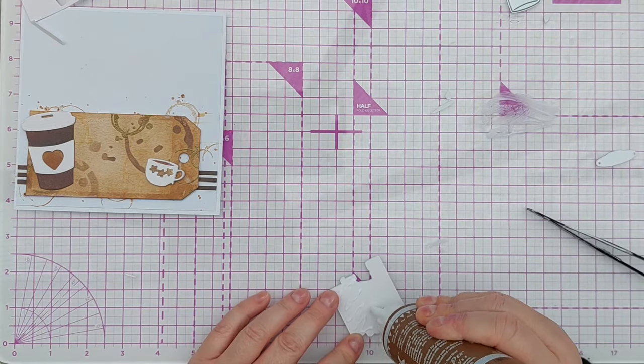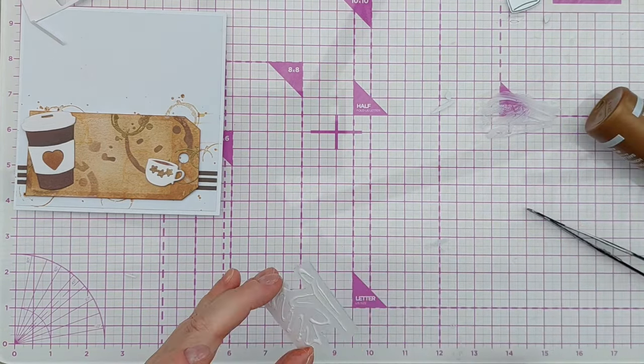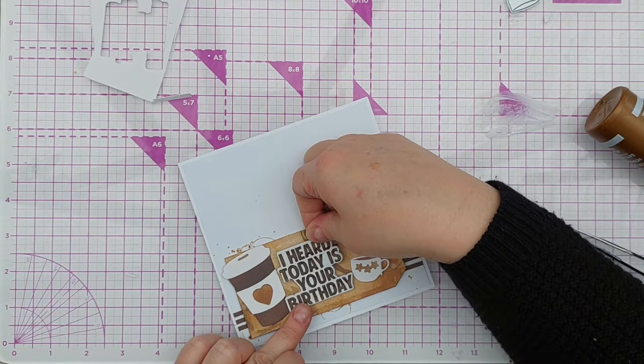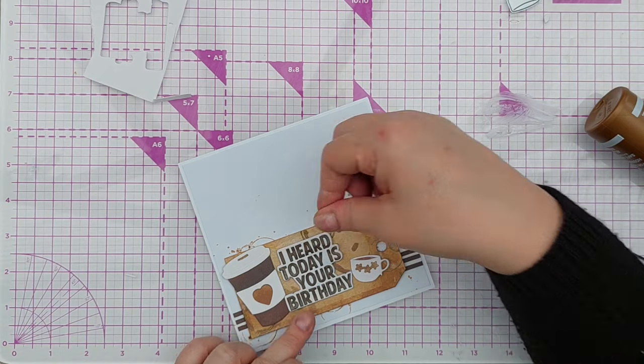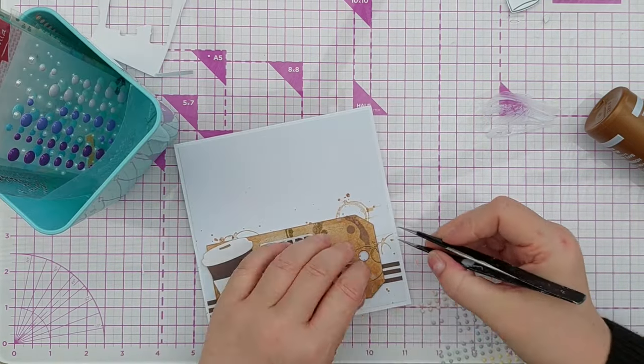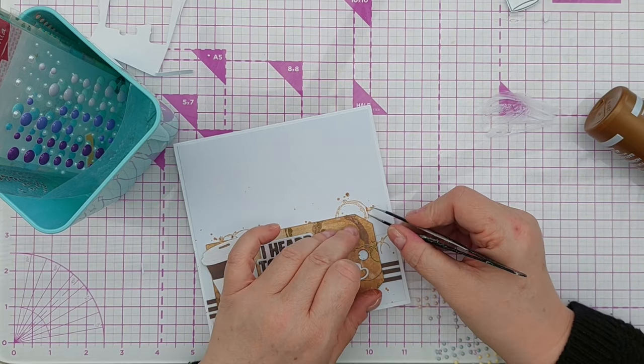And I added that to the sort of center of my tag in between the coffee cups I previously glued down with tacky glue. For finishing touches I added some teeny tiny enamel dots. They're a peachy color but they can get away with being brown.